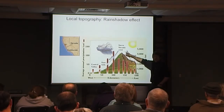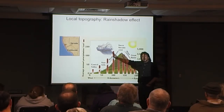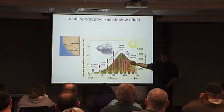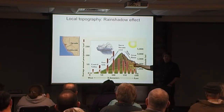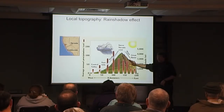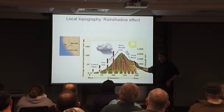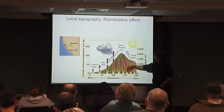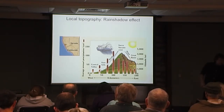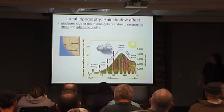As that air crests the mountain and comes back down the other side, it's lost a lot of its moisture. It's now falling, so it's compressing — it's adiabatically heating. When it comes down this mountain, it's dry and getting warmer, which means the relative humidity is dropping and it can actually absorb water from the area. So on the leeward — away from the wind side of the mountain — you get drier conditions. That effect is called the rain shadow. The windward side is wetter, the leeward side is drier.